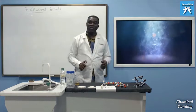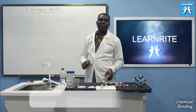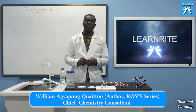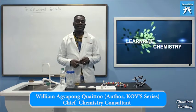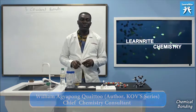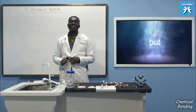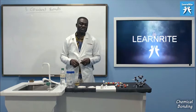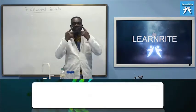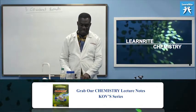Welcome back. We are on covalent bonding. We have tackled the four focal points of each type of bonding. In covalent bonding, we have looked at the nature of formation of covalent bonds, the lattice units of the covalent lattice site, internal forces, and examples. We are here to look at the physical properties, but before we do, we need to understand certain terminologies and characteristics associated with bonds.